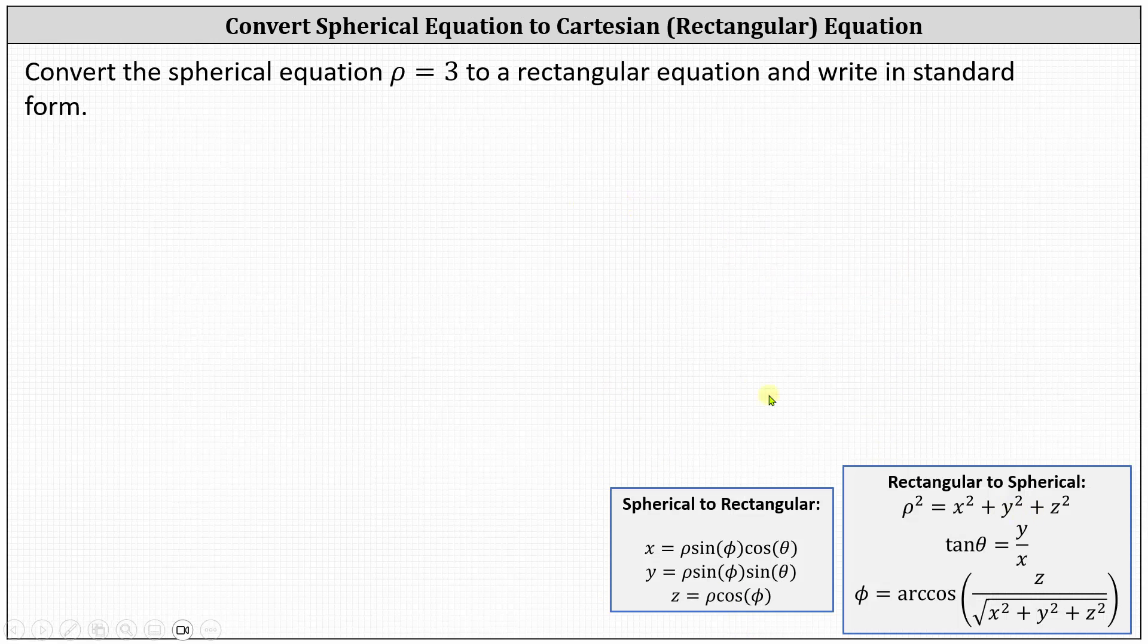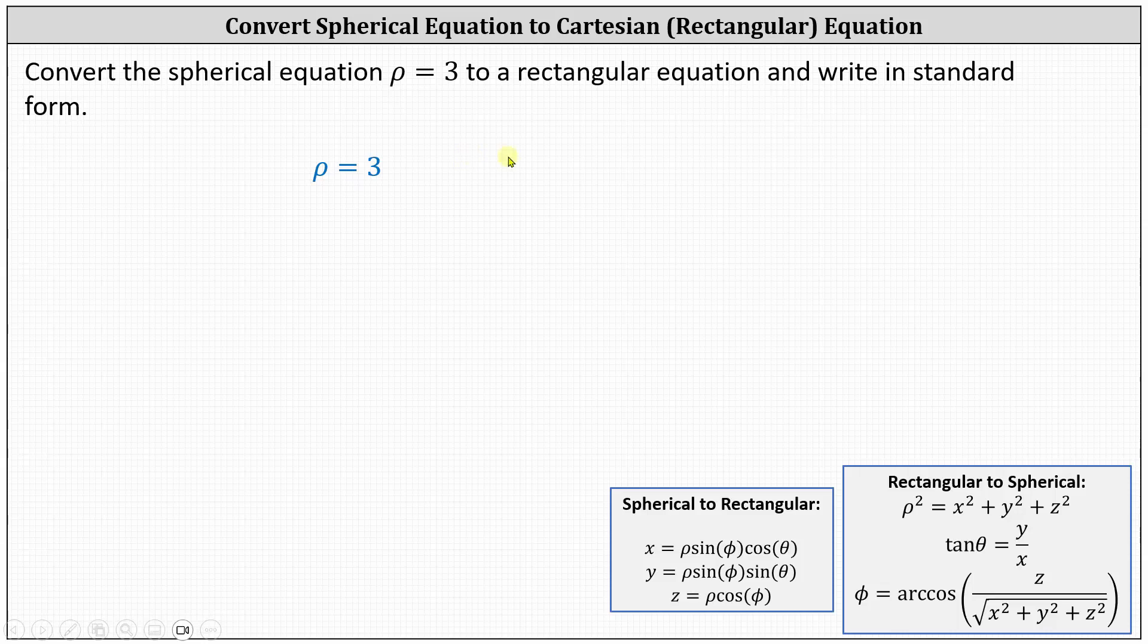Looking at the equations below, if we begin with ρ = 3, it'll be easier to find the rectangular equation using the equation ρ² = x² + y² + z².